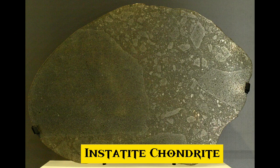19. Enstatite chondrites are a rare form of meteorite rich in the mineral enstatite. Only about 200 E-type chondrites are currently known, comprising about two percent of the chondrites that fall on Earth. There are two main subtypes, EH and EL, classified based on their iron content.